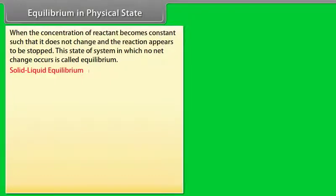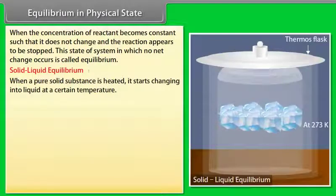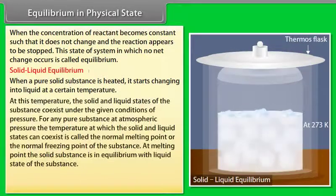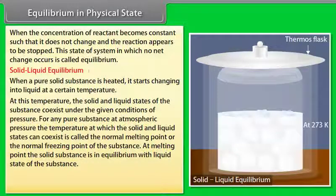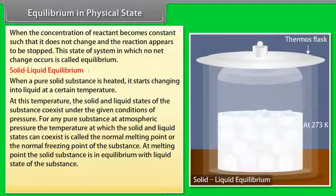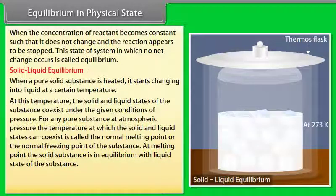Solid-Liquid Equilibrium: When a pure solid substance is heated, it starts changing into liquid at a certain temperature. At this temperature, the solid and liquid states of the substance coexist under the given conditions of pressure. For any pure substance at atmospheric pressure, the temperature at which the solid and liquid states can coexist is called the normal melting point or normal freezing point of the substance.